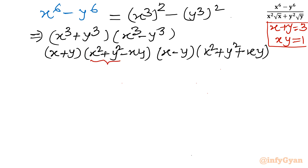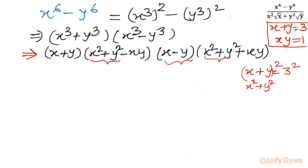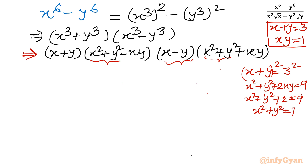We also need x² + y² and x − y. To find x² + y²: square both sides of x + y = 3 to get x² + y² + 2xy = 9. Since xy = 1, we have x² + y² + 2 = 9, so x² + y² = 7.